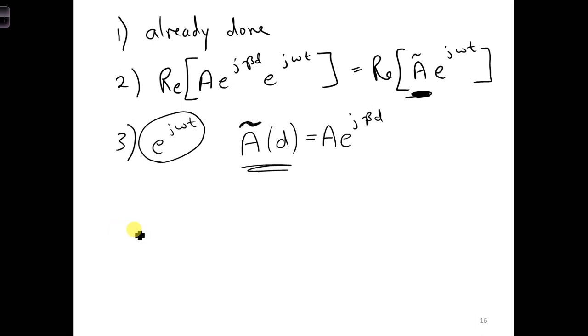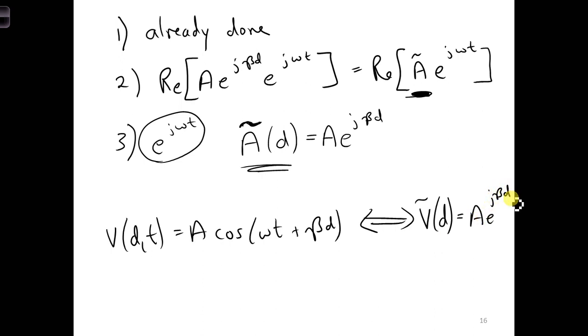So to summarize, in the time domain, we have an expression as a function of time and space, A cosine omega t plus beta d, and we can convert that to the phasor domain. We get V vector phasor, only a function of d is A, e to the j, beta d.